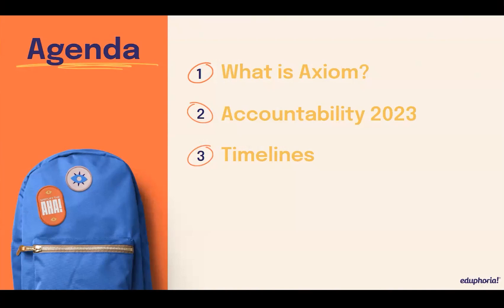Today's main point is we're going to talk about what Axiom is. We're going to do a brief overview of what Axiom is, and what Axiom isn't. We're going to run through accountability 2023, some of the main highlights and points, especially focusing on some of the changes in 2023. And then we're going to get to some timelines about what you can expect and when.